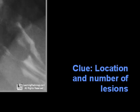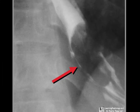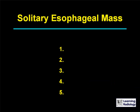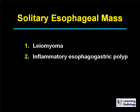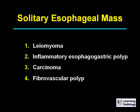The next differential diagnosis is for a solitary esophageal mass. There are five causes: leiomyoma, an inflammatory polyp, carcinoma of the esophagus, a fibrovascular polyp, and a papilloma.